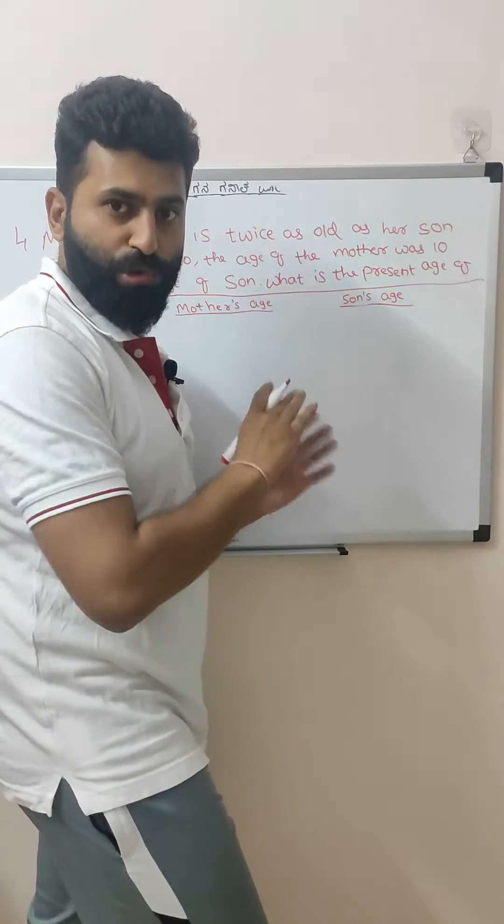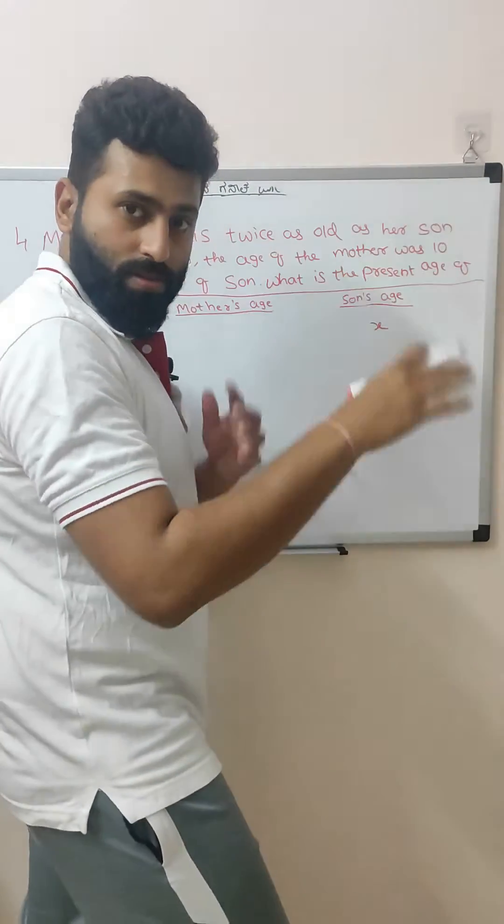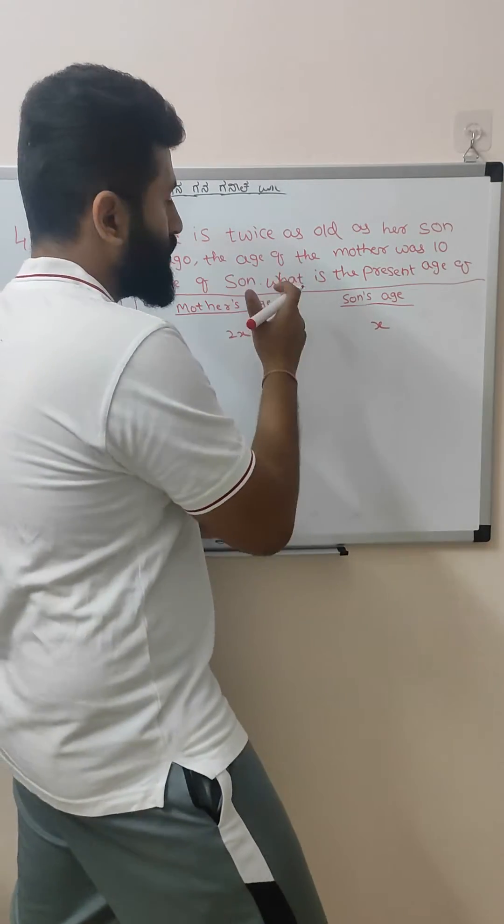You don't know their ages, right? So just assume son's age as x and mother is twice, that means double, so mother's age would be 2x. Now if 20 years ago the age of the mother... 20 years ago means before 20 years, minus 20.